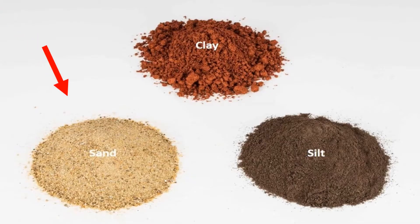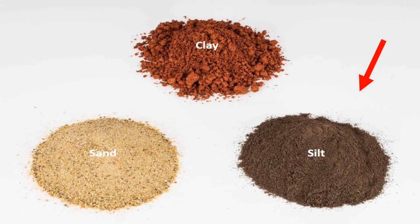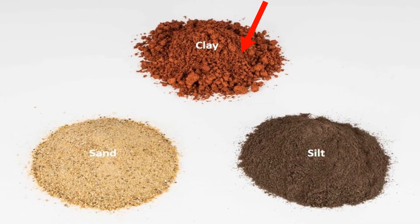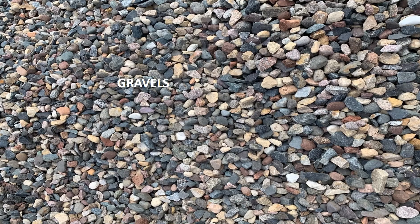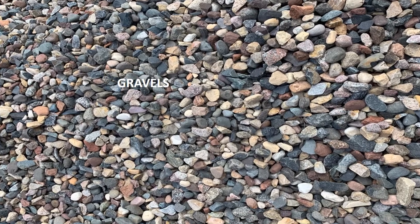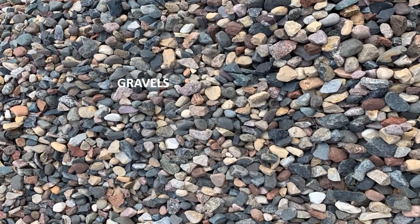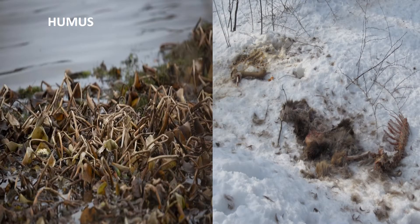Sand are the largest soil particles. Silt are smaller than sand particles but bigger than clay particles. Clay are the smallest soil particles. Gravels are small stones and pebbles. Humus are remains of dead plants and animals.